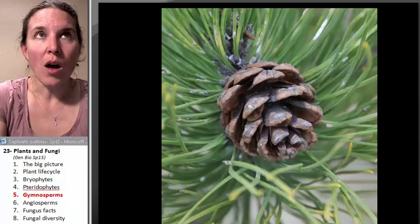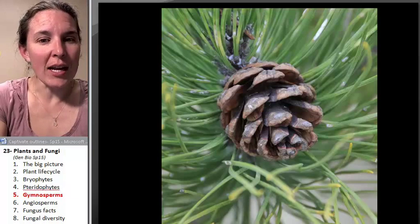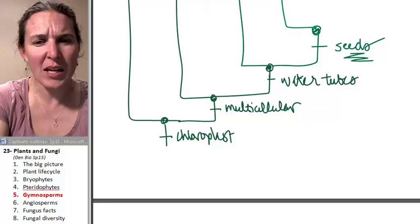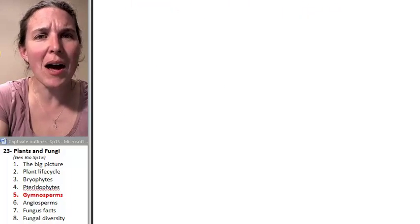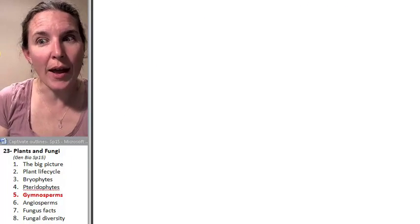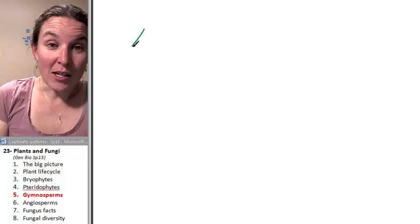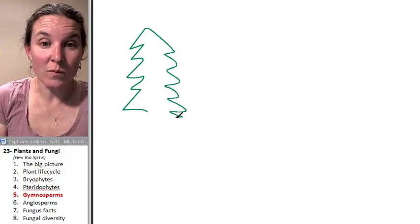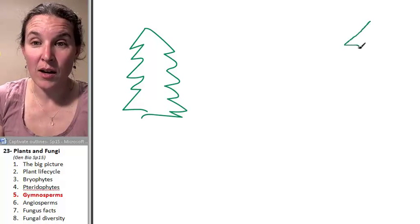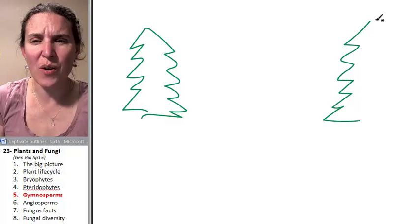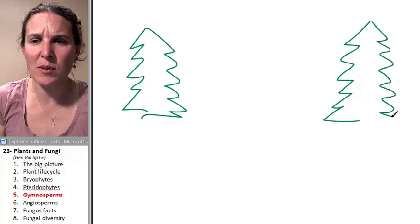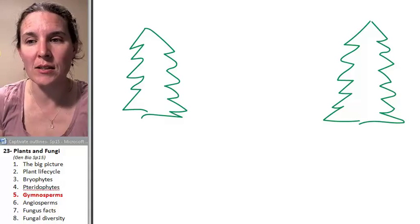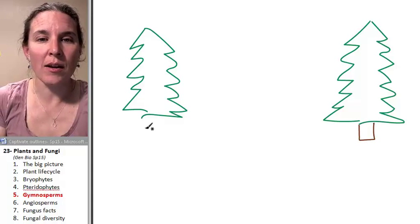Now we still are alternating our generations. So let me just take a moment because we must draw a picture. I'm going to tell you right now that the Christmas tree that you see, that's Christmas tree number one. This is Christmas tree number two. Go ahead and take a wild guess. Do you think my Christmas trees are sporophytes or gametophytes? Go ahead. What do you think?